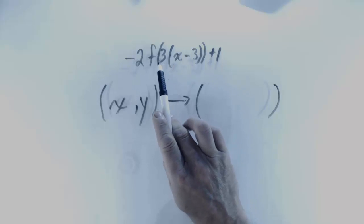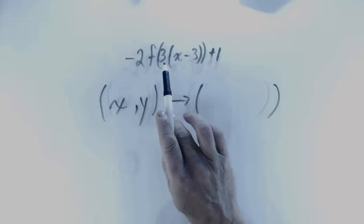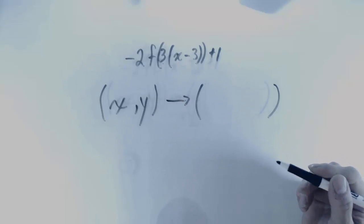If I look here inside the brackets, what is being performed to the function is we are multiplying 3 by whatever is being put into the function. That means it is a compression towards the y-axis by a factor of 1 third.